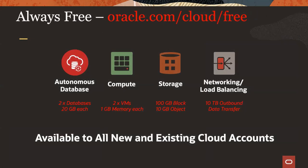This brings us to our always free service. Whether you have a brand new account or you're an existing OCI customer, you can bring up an always free service. With our autonomous database, there's a slider you click that says always free. You can bring up an always free autonomous database in your account and never pay for it. You can create two of them, about 20 gigabytes each. You can use compute to set up your ORDS infrastructure for REST services, Apex, or use the built-in ORDS or Apex on the autonomous database.